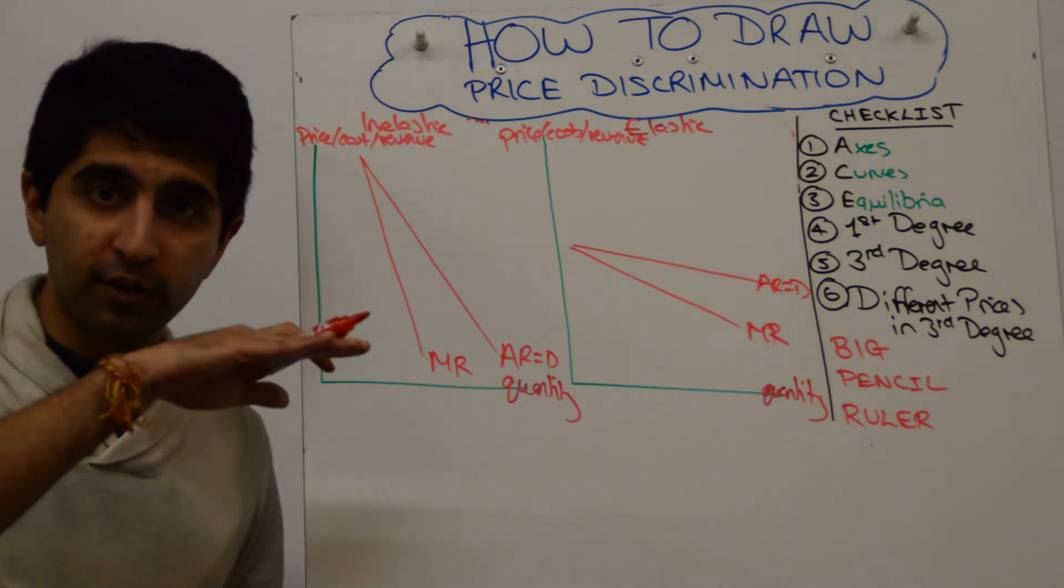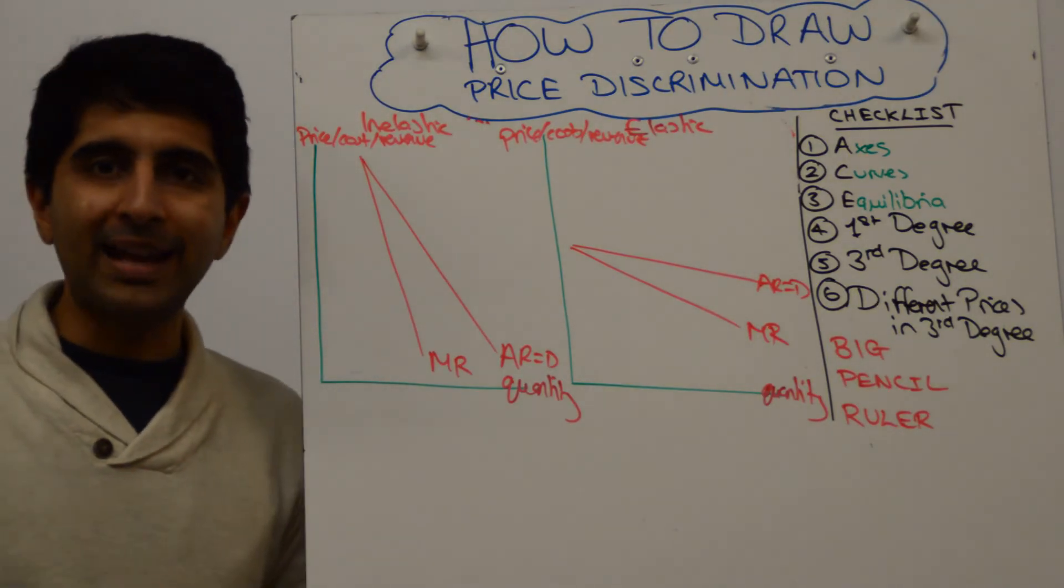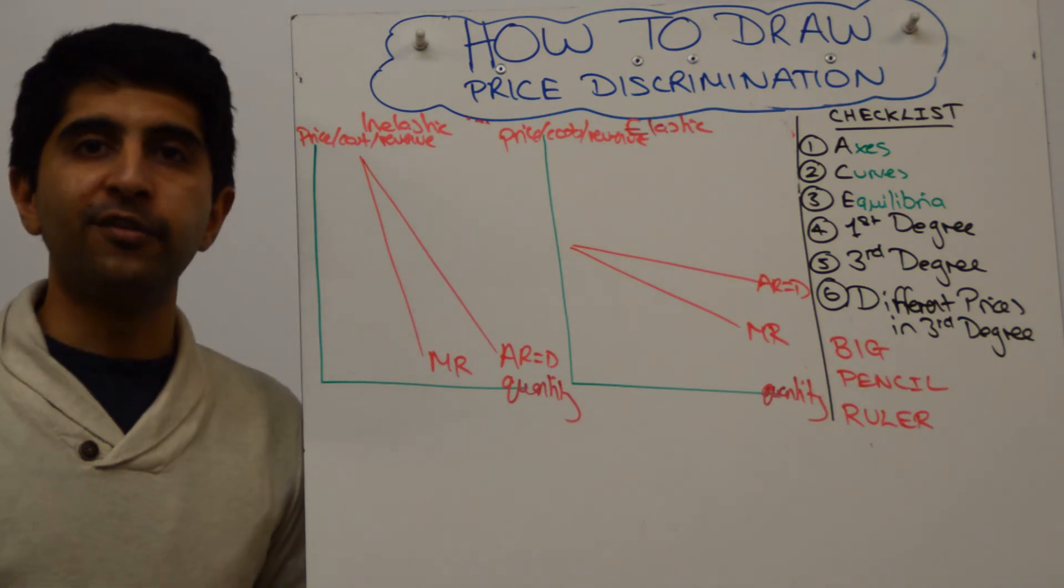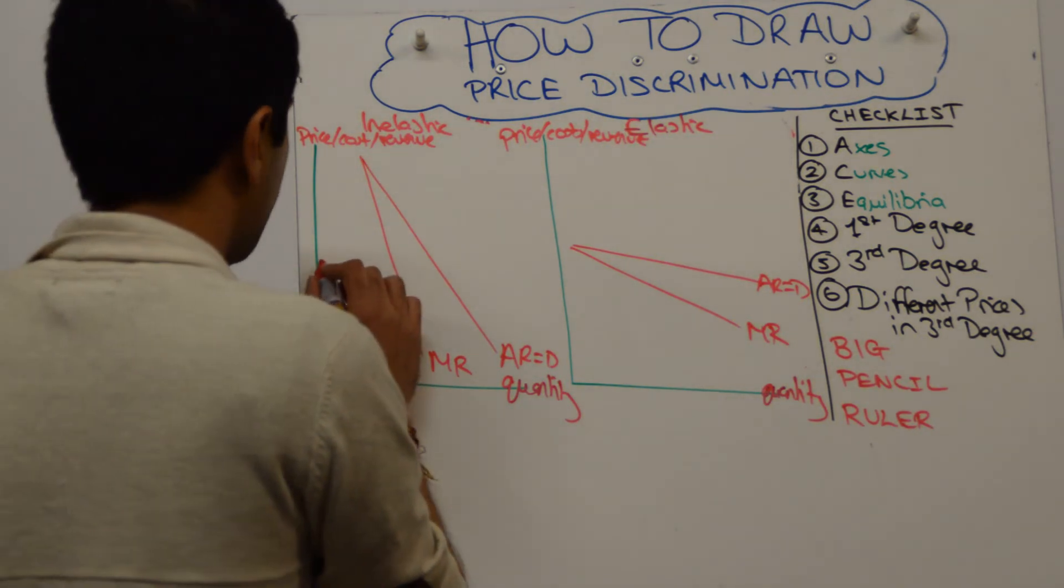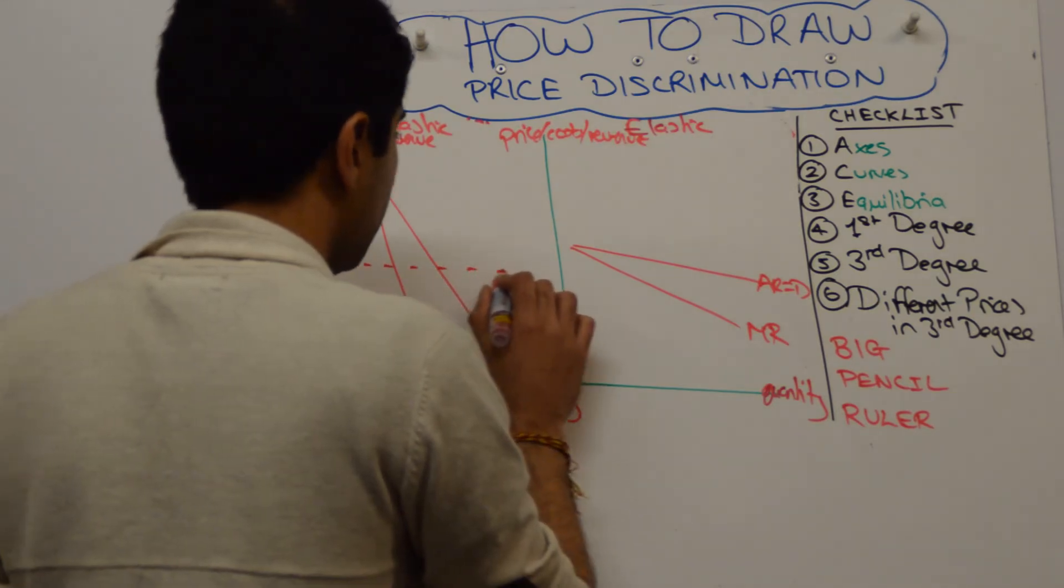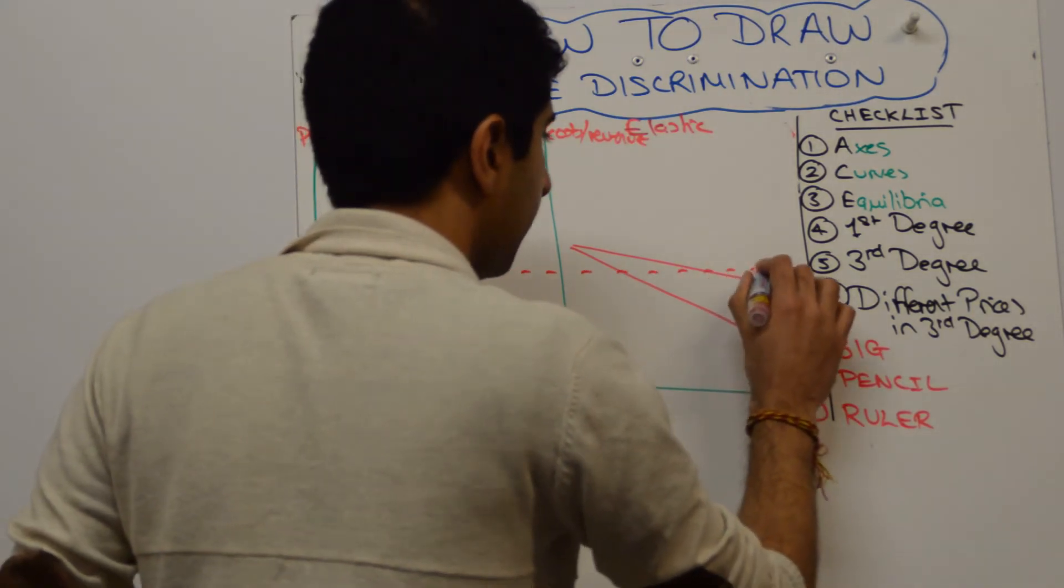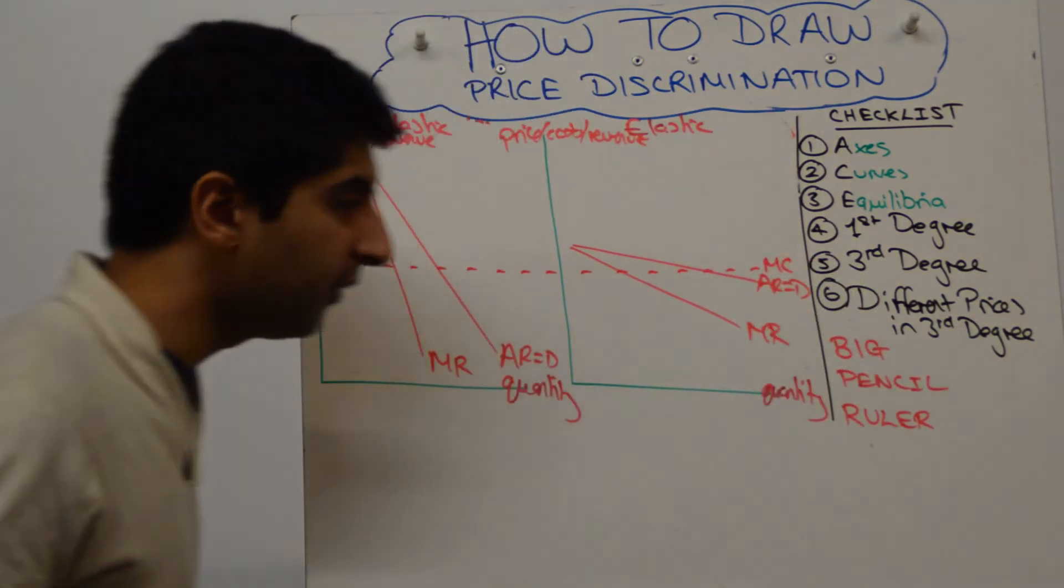Remember, the assumption here is that marginal cost is horizontal. If you don't understand any of this theory, go and watch my previous video on price discrimination. So let's draw our marginal revenue curve and label it as such. Oh, sorry, marginal cost curve and label it as such.